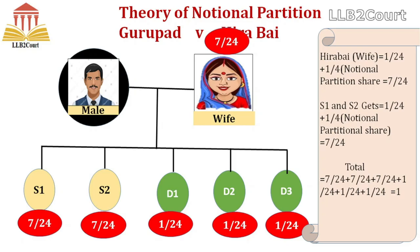After the Gurupad versus Hirabai decision, some rejected views also emerged. One view was that since the partition is notional and not actual, Hirabai gets no share in her own right. Another view was that although the mother counts for one share, no share should actually be allocated to her since it is only a notional partition. However, the Supreme Court rejected these views, observing in Rajdani versus Chief Settlement Commission Delhi that the notional partition must be treated and accepted as a concrete reality. This is a very important concept for understanding Section 6, as it is given in the explanation to the proviso.